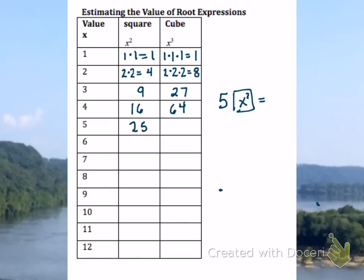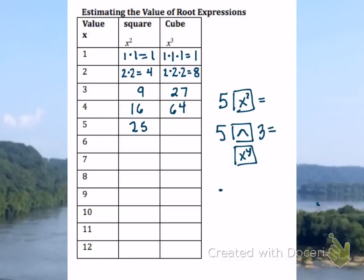To get the cubed — the power of 3 — some of you will have an x³ button, but some of you will need to use the powers button, which either looks like a little caret or an x-to-the-y button. You then tell it what power you're using. In this case, cubing means power of 3, giving you 5 times 5 times 5, or 5 cubed, which is 125.